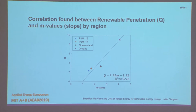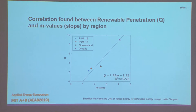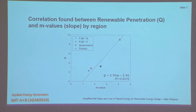The correlation we ended up thinking is fairly significant is the relationship between renewable energy penetration — the percentage of renewable energy produced in a region as a percentage of total energy — and M-value, which is what we're calling that slope value. We see a positive linear correlation between the two, which we think is a possible reason that some areas have a higher slope in that price-demand relationship than others.